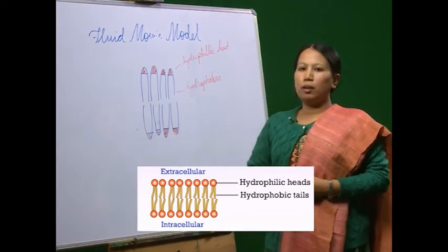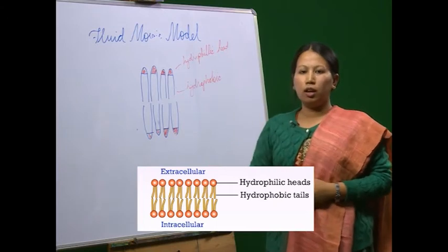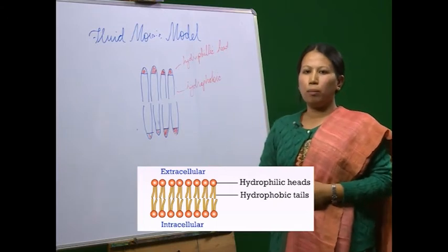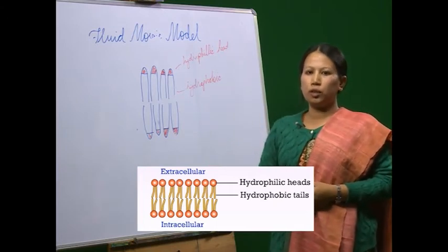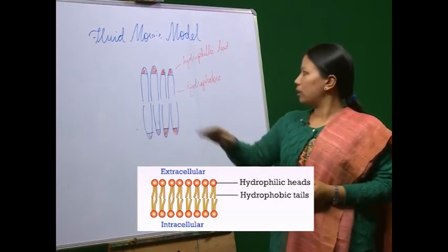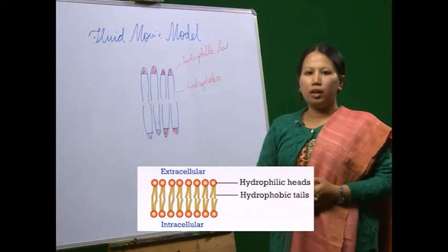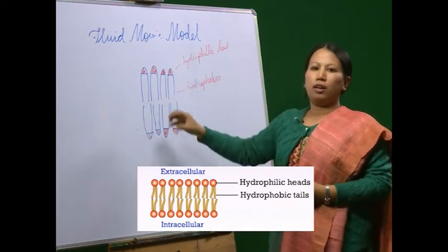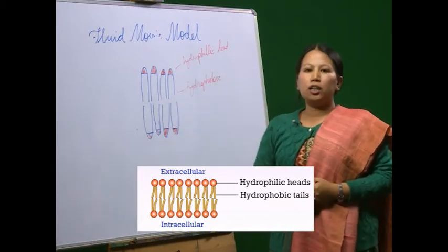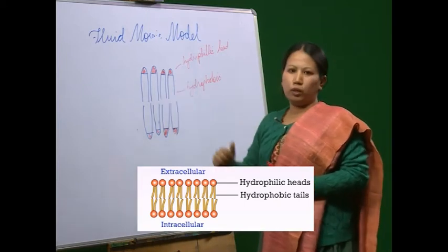Gorter and Grendel in 1925 were the first to suggest a possible structure of the cell membrane based on their studies of cell membrane of erythrocytes from the red blood cell. It was thought that the membrane consisted of double layers of lipid molecules. This is the lipid bilayer model, where the polar hydrophilic groups of molecules are situated on the outside of the membrane and the hydrophobic ends standing at right angles to the surface are oriented inwardly.